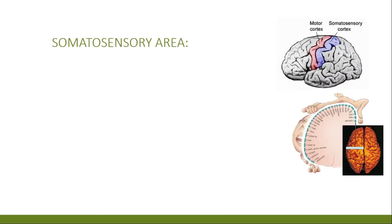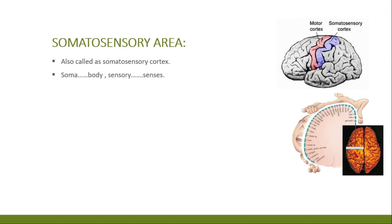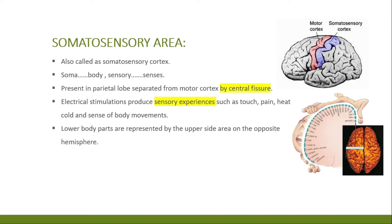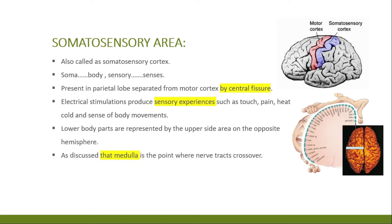The somatosensory area, also called the somatosensory cortex, is located in the parietal lobe, separated from the motor cortex by the central fissure. 'Soma' means body, so this is the body sense area. This area produces sensory experiences from the opposite side of the body. It represents heat, touch, cold, pain, and the sense of body movement. The lower parts of the body are represented in the top area of the sensory cortex in the opposite hemisphere.